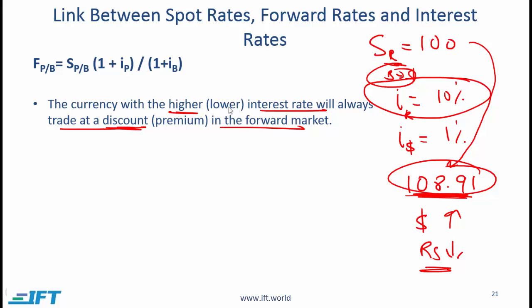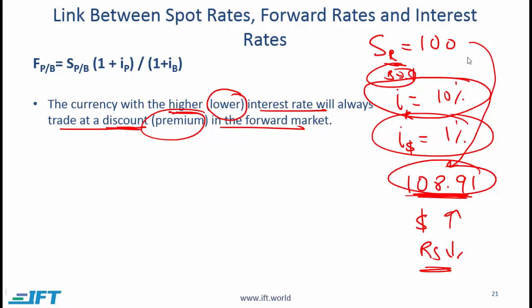What about the currency with the lower interest rate? The dollar, having the lower interest rate, will trade at a premium in the forward market. The dollar's forward rate is higher than the spot rate — the dollar is trading at a premium.